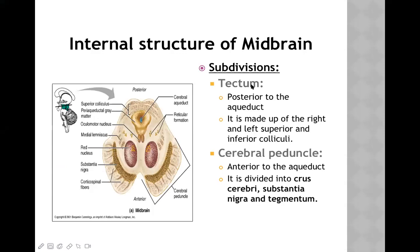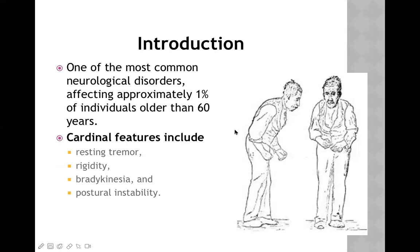Parkinson's disease is one of the most common neurological disorders in clinical practice, affecting approximately one percent of individuals older than 60 years. It usually affects older people, in whom there is death or degeneration of neurons inside the central nervous system.